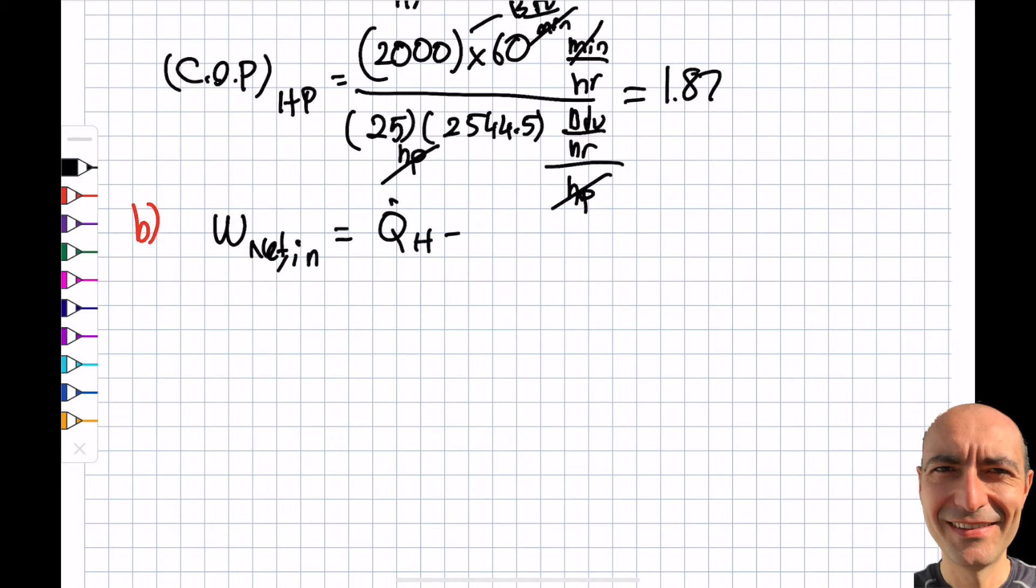W_dot_in is 25 times 2544.5, which is BTU per hour, minus Q_dot_L. From here it's simple math. I got 56,387 BTU per hour.